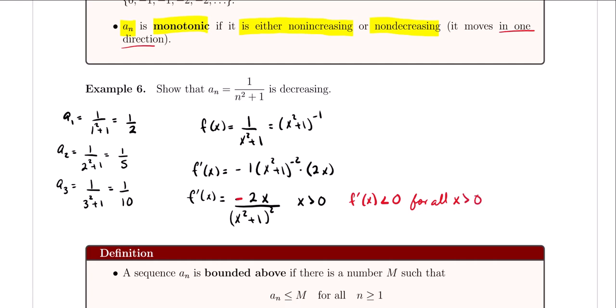A negative derivative means the function is decreasing, so we know that this function is decreasing for all x greater than 0, which means that the sequence a_n = 1/(n² + 1) is always decreasing.